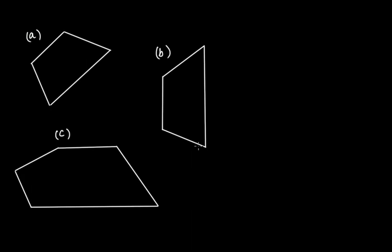Now look at this figure — this pair of opposite sides is parallel, but it is not a quadrilateral because it has five sides: one, two, three, four, and five. So this is not a trapezium because it's not a quadrilateral in itself.